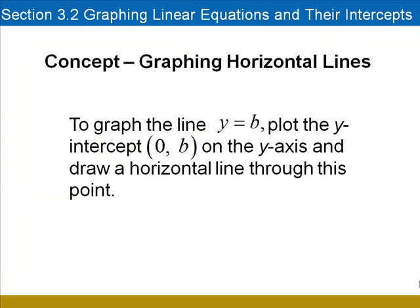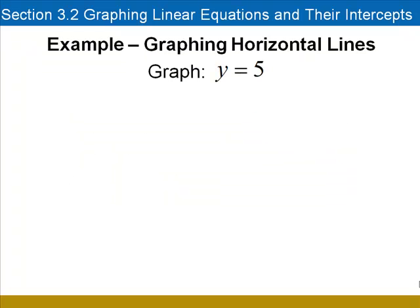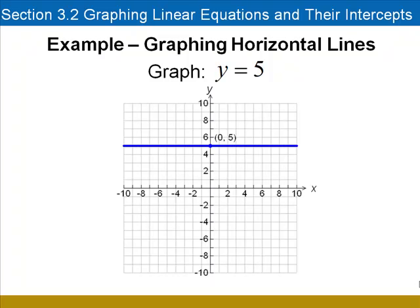A horizontal line has the equation of the form y equals b. To graph this type of line, we'll plot the y-intercept at 0b on the y-axis and draw a horizontal line through the point. In other words, to graph the line y equals 5, we begin by putting the y-intercept at 0 comma 5 and then we draw the horizontal line that passes through it.